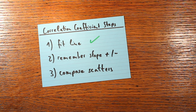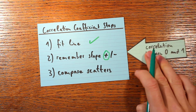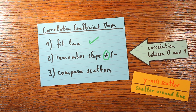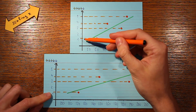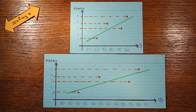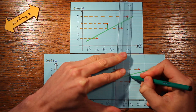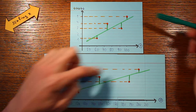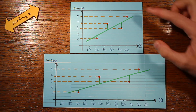In the second step, we check if the slope is positive or negative. In our case, both slopes are positive, so both correlation coefficients will be between 0 and 1. In the third step, we compare the scatter along the y-axis against the scatter around the fitted line. The y-axis scatter is actually the same in both plots — that makes sense because I only multiplied the x values. And the distances between the fitted line and the data points have also stayed the same in both data sets.